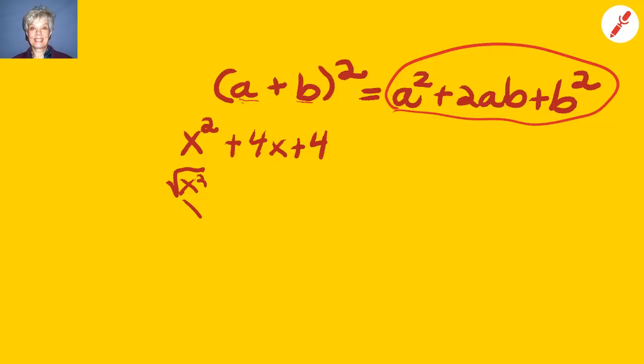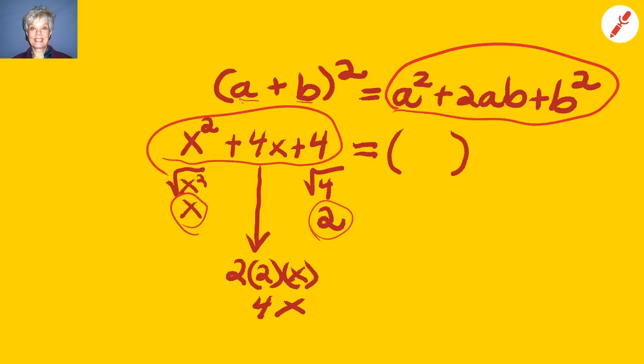The square root of x squared is x, and the square root of 4 is 2. Now, will the middle term be 2 times x times 2? Yes, it will. So, this is a perfect square trinomial, and it can be factored very quickly into x plus 2, that quantity in parentheses squared. This is just a shortcut. You can always factor this by grouping, but it's nice to know about this.